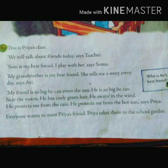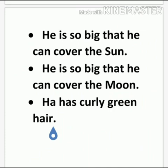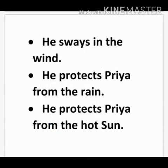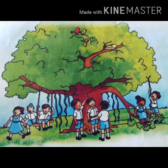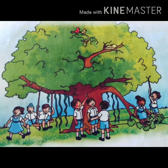Priya also told about her special friend. The question is, why is Priya's friend different from others? Priya's friend is different because he is so big that he can cover the sun. He is so big that he can cover the moon. He has curly green hair. He sways in the wind. He protects Priya from the rain and from the hot sun. Now everyone wants to meet Priya's friend. So Priya takes them to the school garden and points to a big banyan tree. It is the banyan tree. All the children play with Priya's friend.